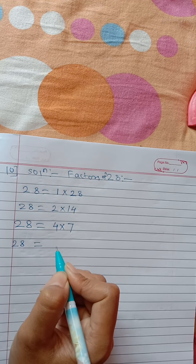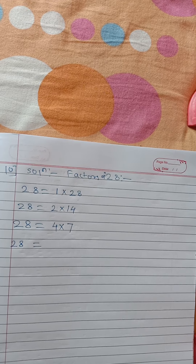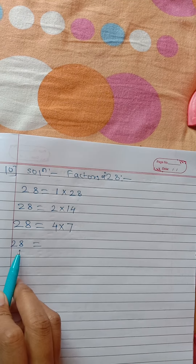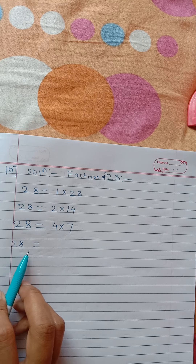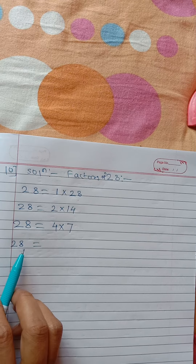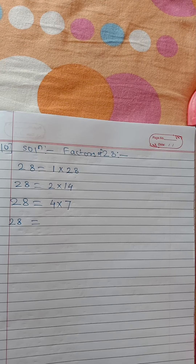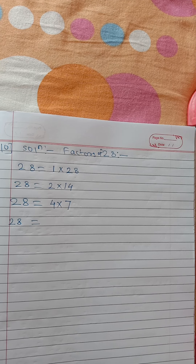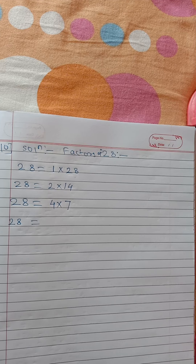5 is a factor only of numbers that have 0 or 5 at their ones place. Since 28 has 8 at its ones place, 5 cannot be a factor of 28. Next, does 28 come in the table of 6? 6 fours are 24, 6 fives are 30 — so 28 is not in the 6 times table. You can verify: 28 divided by 6 gives remainder 4, so 6 is not a factor of 28.